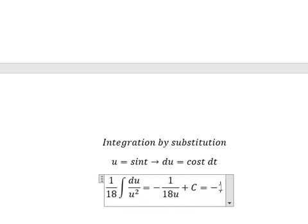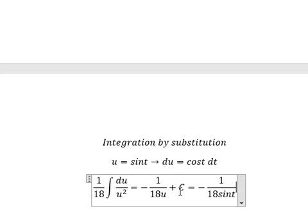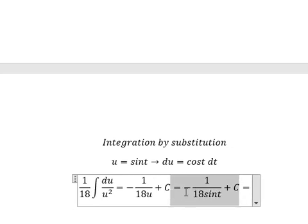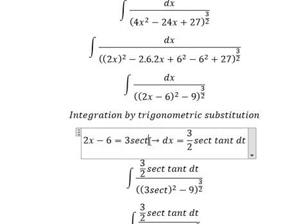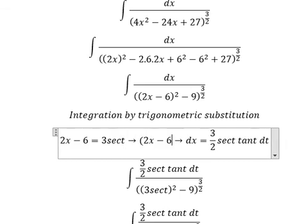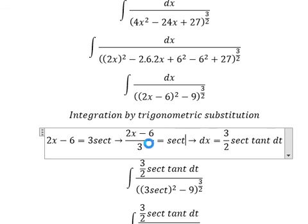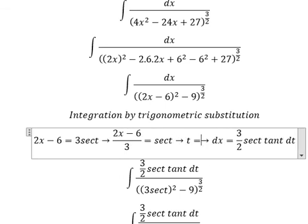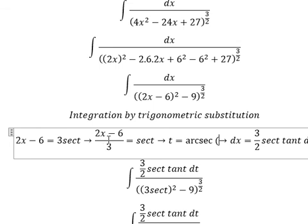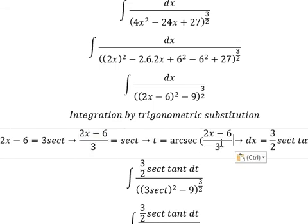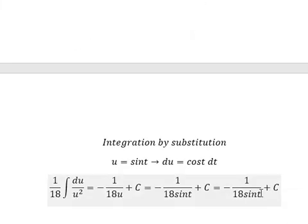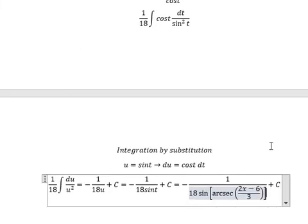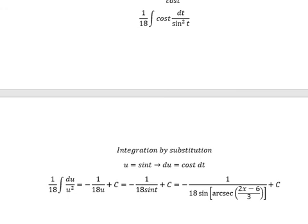And we put c in here. About u, that's about sin t. About t, that is about this one. So we need to divide both sides by number 3. And then we have t equals to arcsec of 2x minus 6 over 3. So I will put this one to replace for t. This is the end. Thank you for watching.